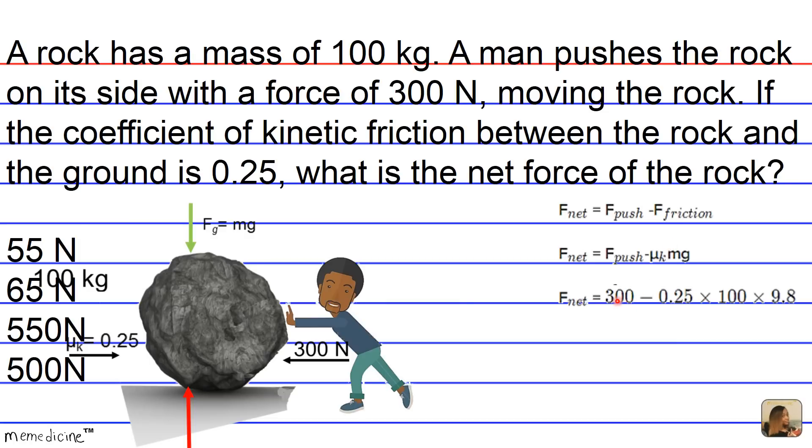F push we know is 300 newtons, and we designated this direction as positive, minus our coefficient of kinetic friction 0.25 times 100 kilograms times 9.8, which is our acceleration due to gravity.